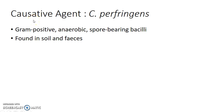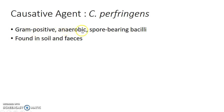Now let us see about the causative agent in detail. The most common agent implicated in gas gangrene is Clostridium perfringens. It is a gram-positive, anaerobic and spore-bearing bacillus. It is found mostly in soil and feces.